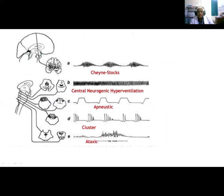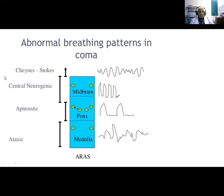The respiratory patterns in coma include: Cheyne-Stokes, central neurogenic hyperventilation, apneustic breathing with brainstem pontine lesions, cluster breathing, and ataxic/irregularly irregular breathing with medullary lesions. These patterns differ in amplitude and rhythm and are used to localize the level of brainstem dysfunction.